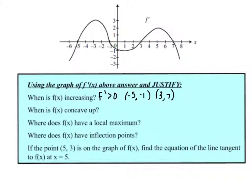A function is concave up when its second derivative is positive, so its first derivative is increasing. That occurs from negative 6 to negative 3, from 1 to 5.